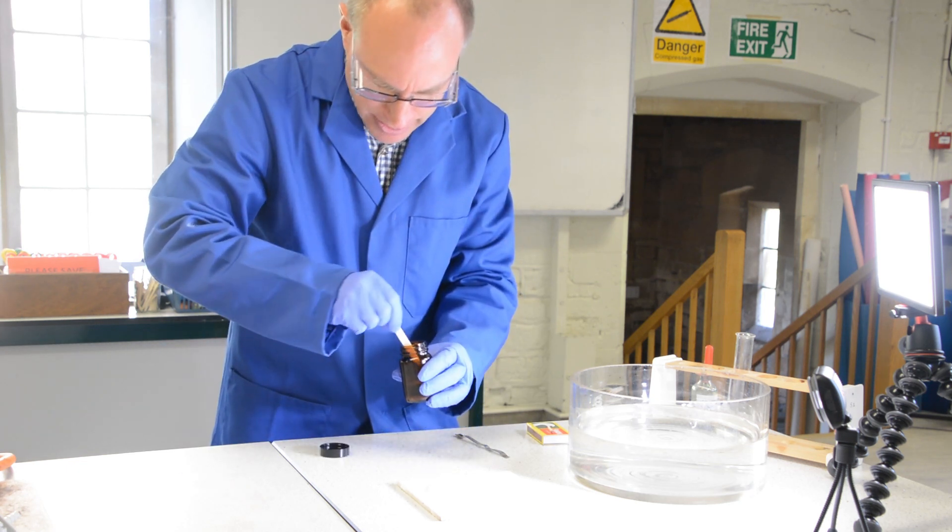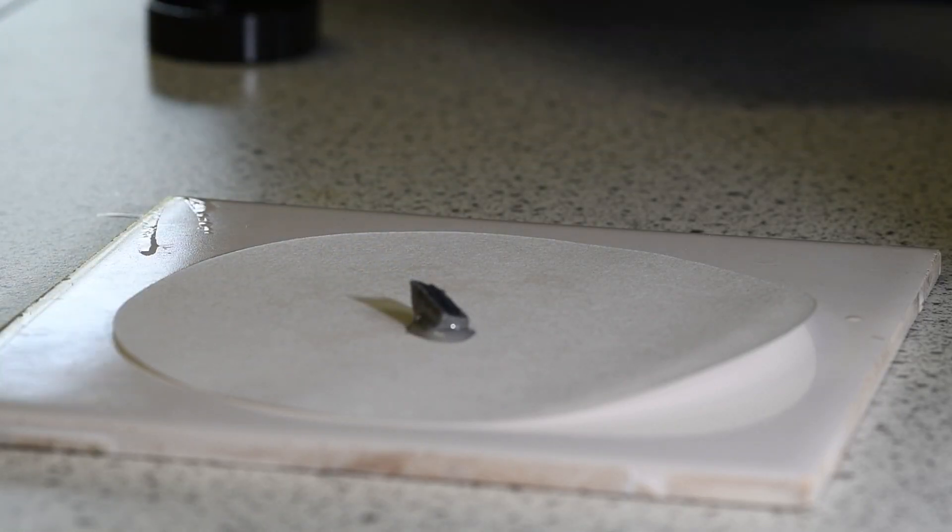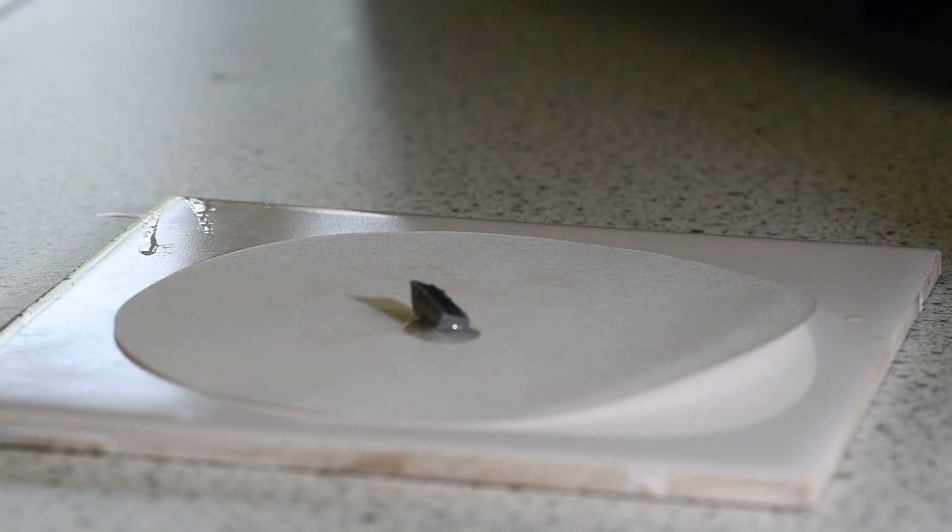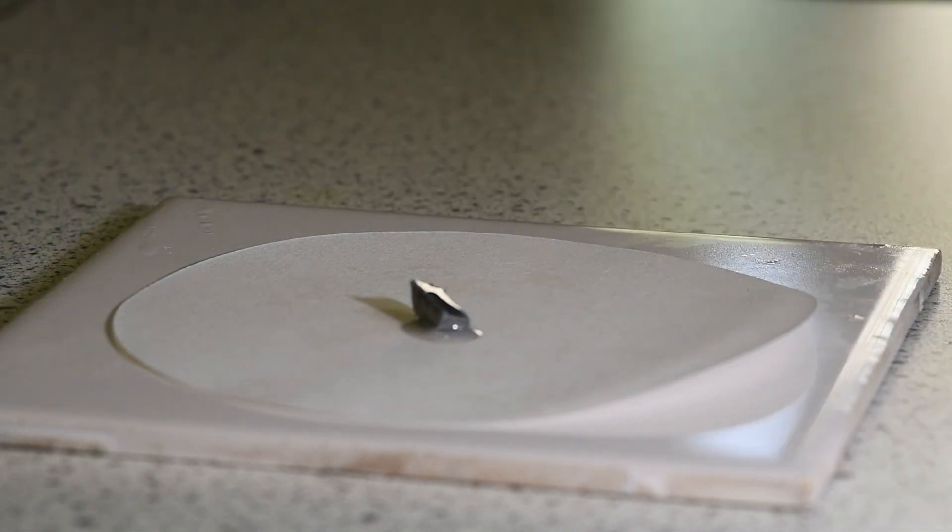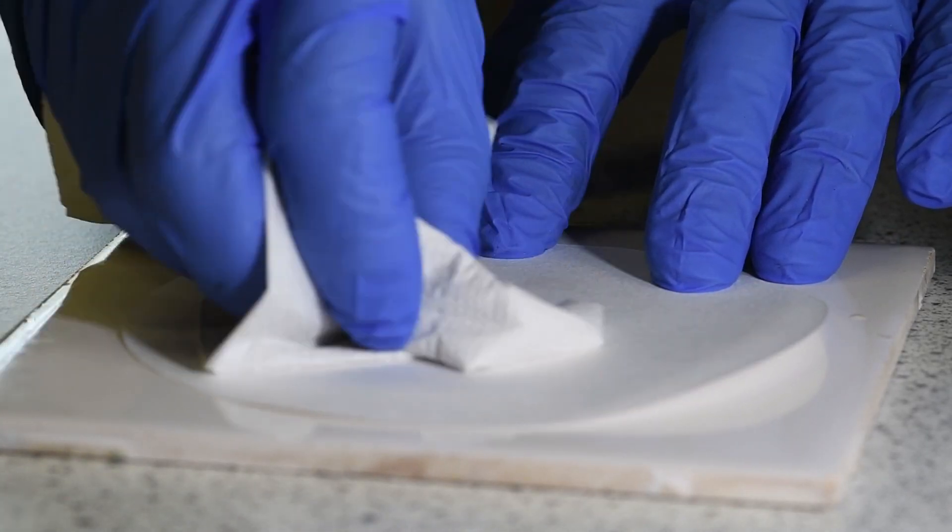So the first alkali metal we're going to look at is lithium. Notice that it's stored under oil because it's so reactive. I'm just going to dry some of that oil off the surface.